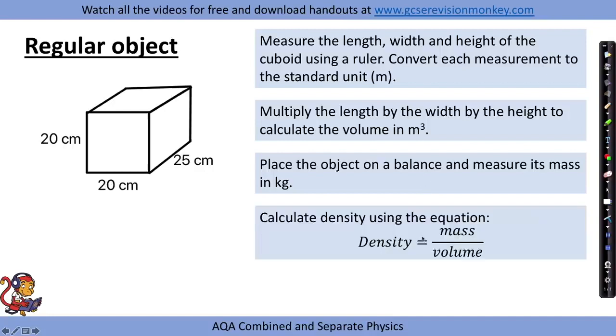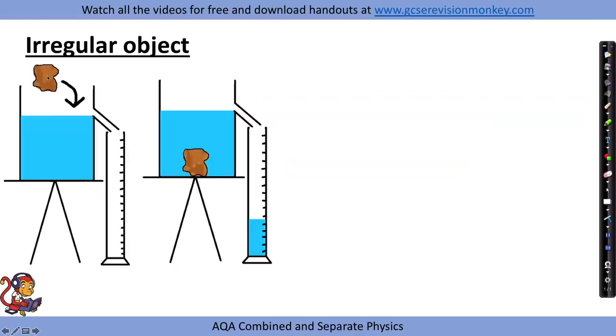For irregular objects, we again need to calculate the mass by placing the object on a balance and measuring its mass in kilograms.